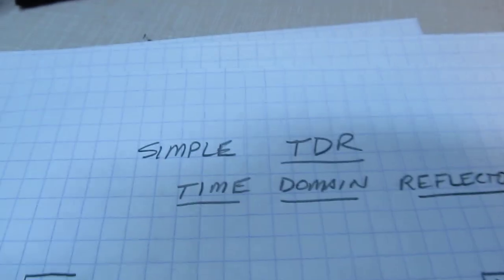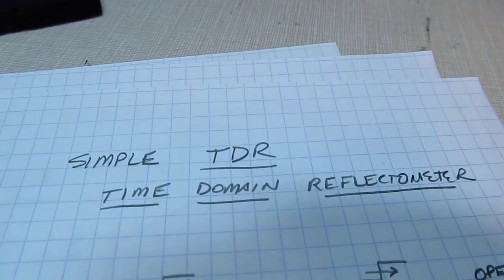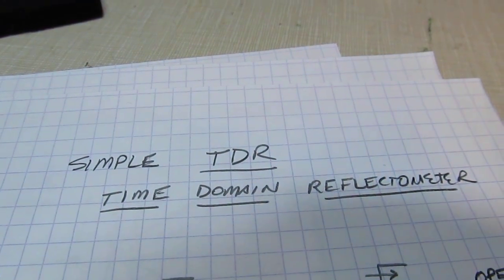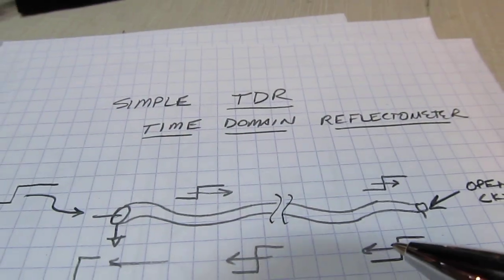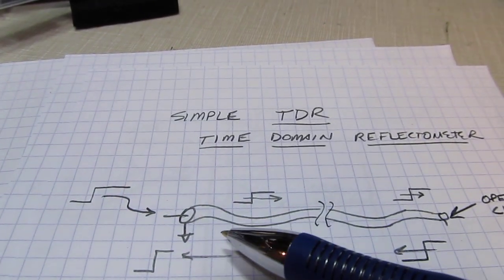I did a video a couple of weeks ago that showed the basics of a TDR where you essentially would launch a pulse into the end of an unknown piece of coax.